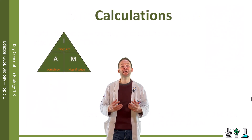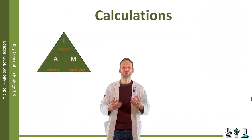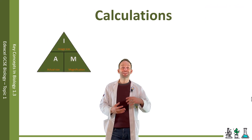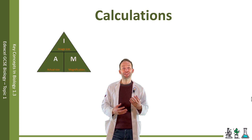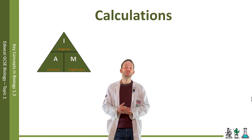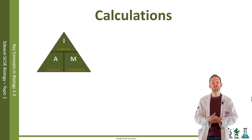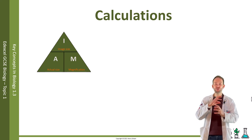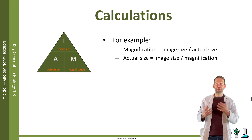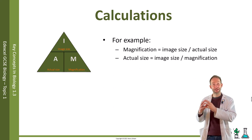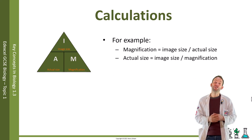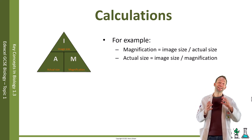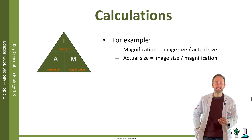Often you are asked to calculate what magnification an image is shown at, or to calculate the actual size of a specimen when you know the magnification. To do these calculations, you use what is known as the IAM triangle: I stands for image size, A for actual size, and M for magnification. It allows you to rearrange the equation depending on what you need to calculate. To calculate magnification, you do image size over actual size. To calculate the actual size, you do image size over magnification.